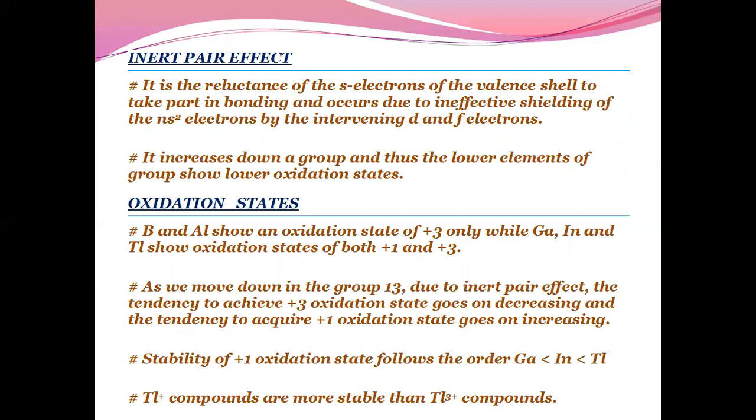Inert pair effect: It is the reluctance of the S electrons of the valence shell to take part in bonding and occurs due to ineffective shielding of the NS electrons by intervening D and F electrons. It increases down the group and thus the lower elements show lower oxidation states.